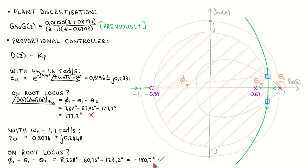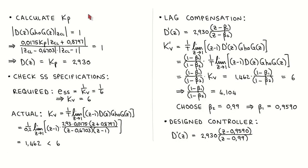We can of course iteratively refine the natural frequency even more, but for the purpose of this example we select these as the closed loop poles. We now calculate the proportional controller gain to place the closed loop poles in these locations. When we apply the magnitude condition evaluated at the chosen closed loop poles, we arrive at a gain of 2.93.